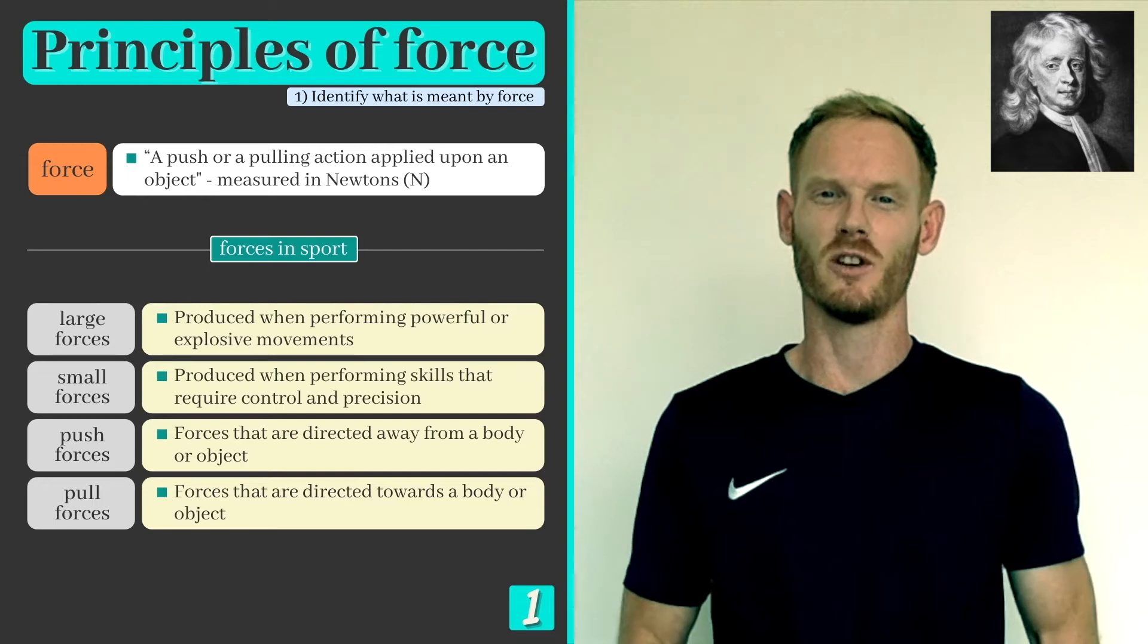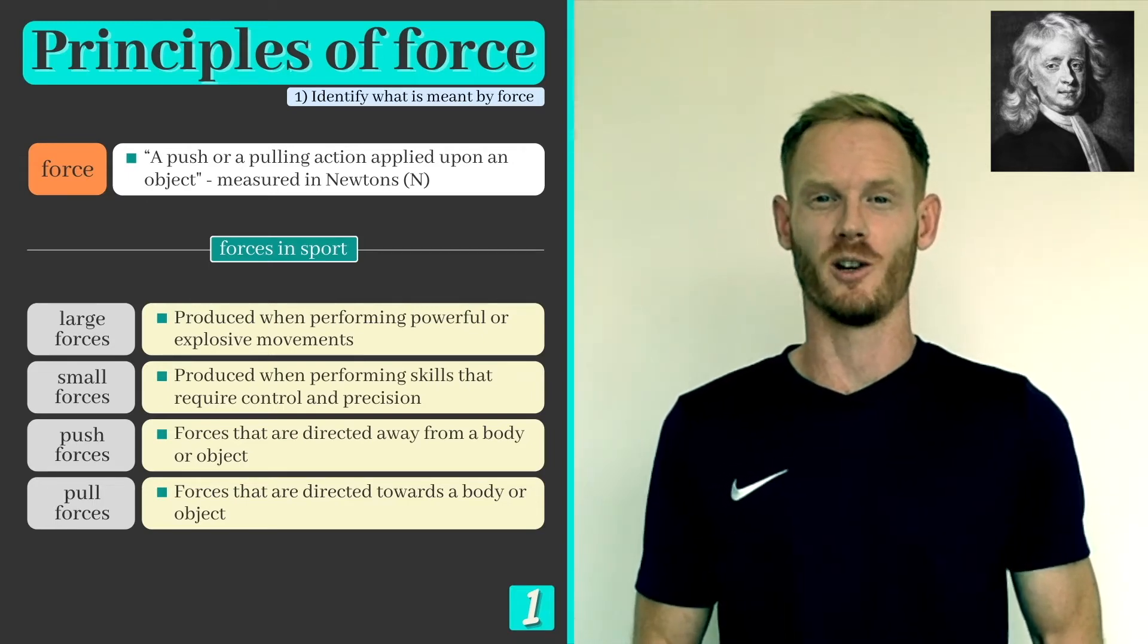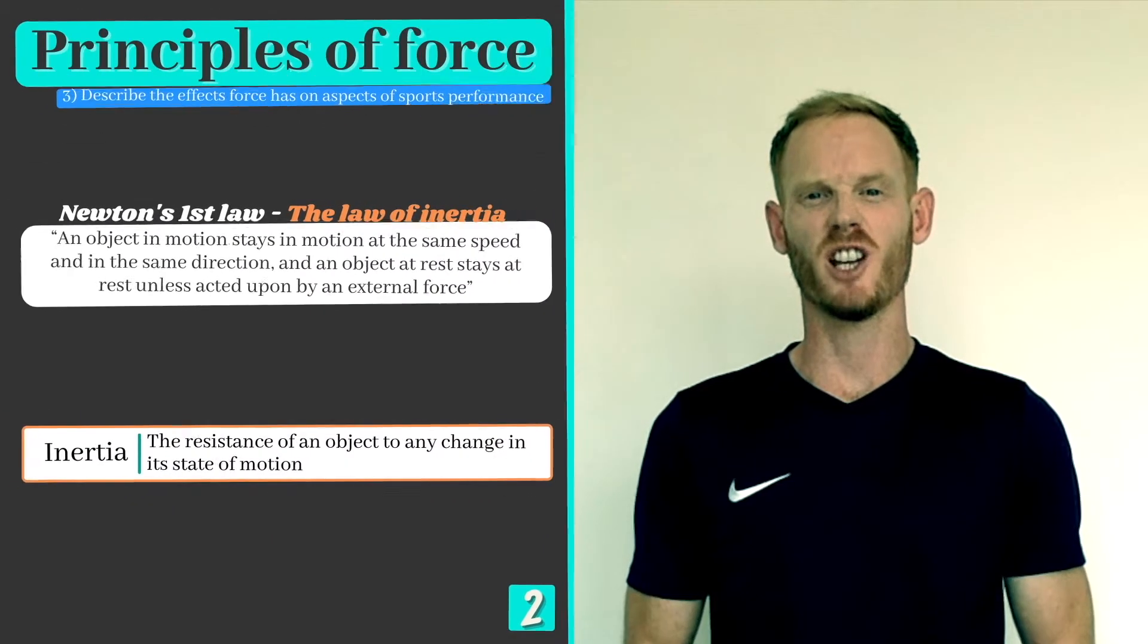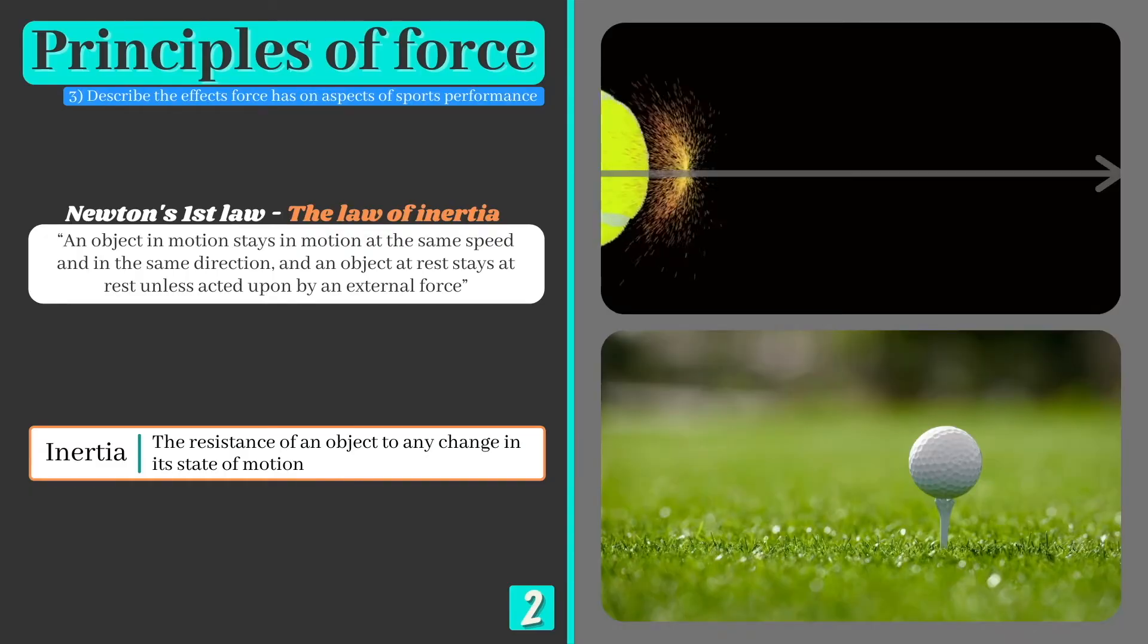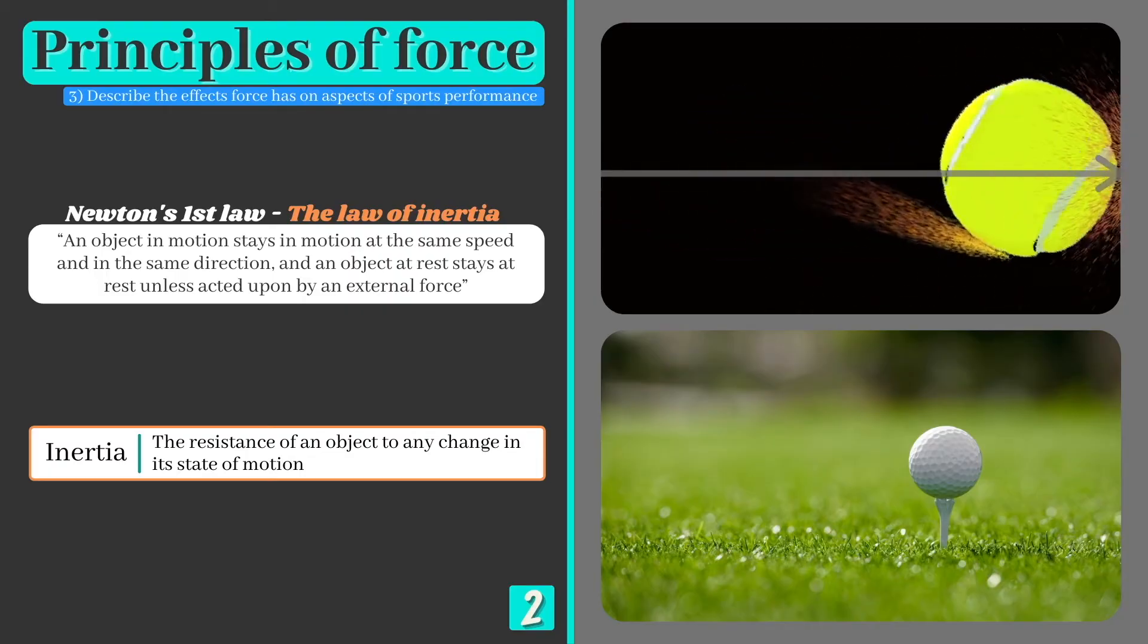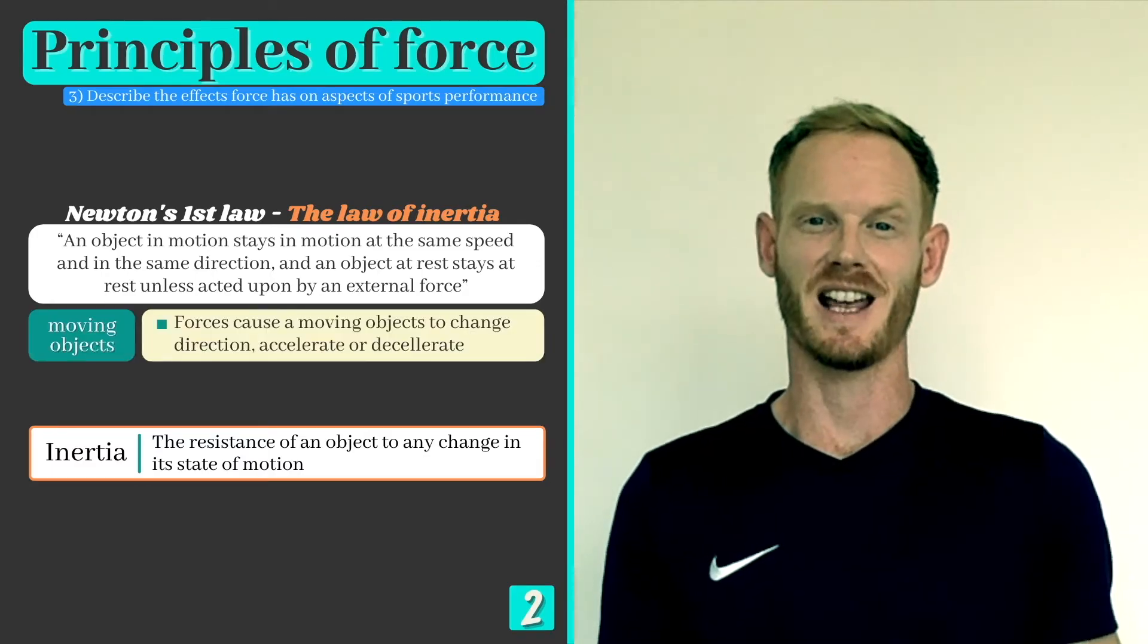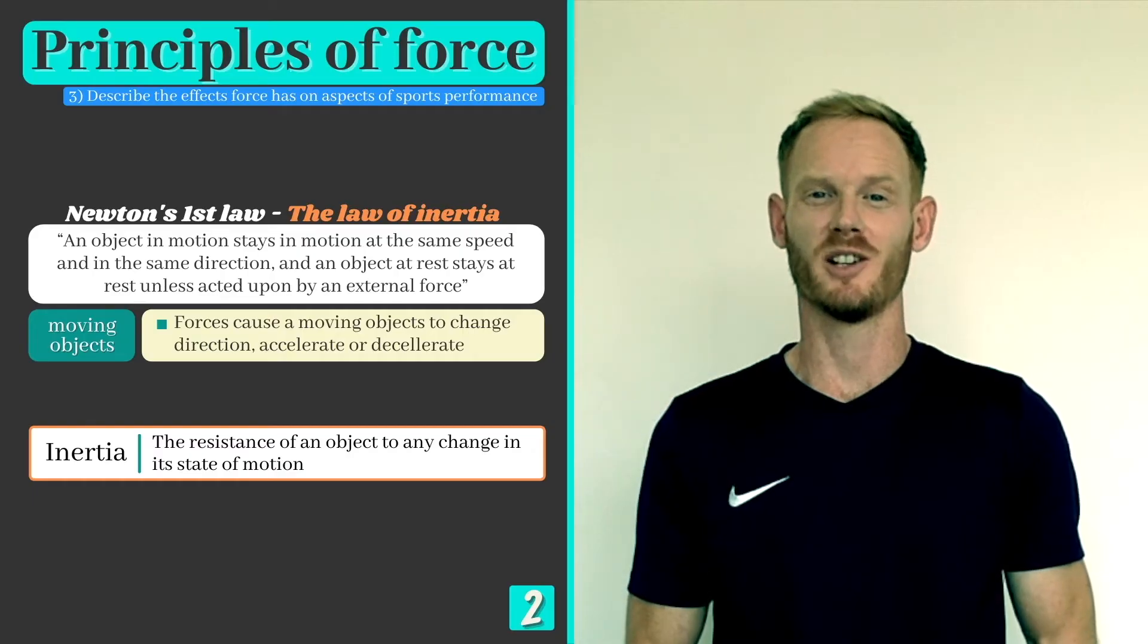The 17th century physicist Sir Isaac Newton discovered three laws that govern motion and gravity, and we'll take a look at these now and apply them to a sporting context. Newton's first law is the law of inertia, which states that an object in motion stays in motion at the same speed and in the same direction, and an object at rest stays at rest unless acted on by an external force. The first part of this statement relates to moving objects and explains that a force is required to cause a moving object or body to speed up, slow down or change direction.